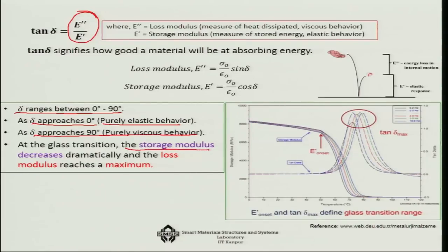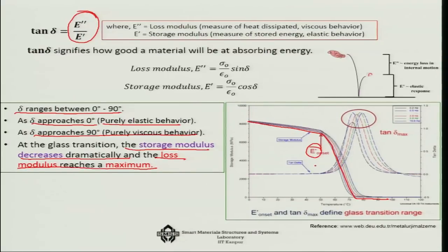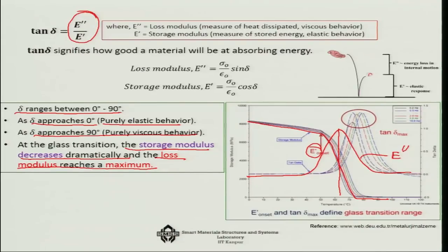At the glass transition temperature, the storage modulus E' decreases dramatically while the loss modulus E'' reaches a maximum — just like tan delta. So at Tg, E' is decreasing while E'' shows a peak. This comparison between E' and E'' gives a clear picture of the viscoelastic transition occurring at the glass transition temperature.